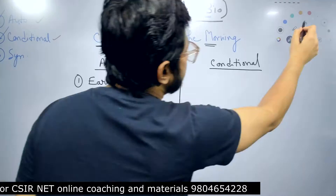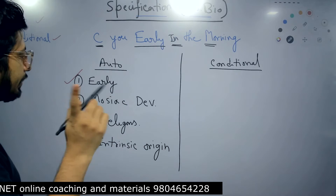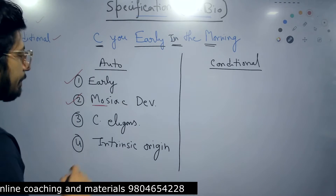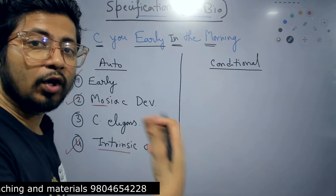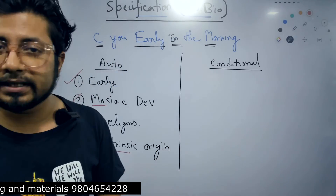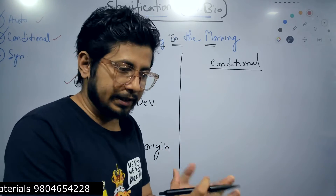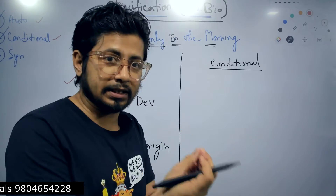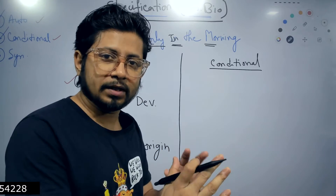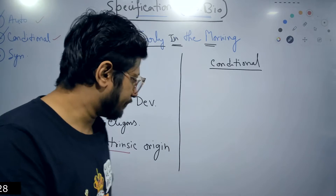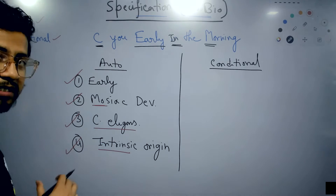So these are the four features we can easily draw from the sentence 'See you early in the morning': Early — it happens early during development; Morning — MO for mosaic development; In — for intrinsic, meaning intrinsic factors play a crucial role in autonomous specification. Intrinsic factor means anything related to genes, the mRNAs present even before fertilization — they play an important role. Right after fertilization the mRNA is translated into proteins, and the presence of those proteins results in the transformation of the embryo. The example is C. elegans development, which is an example of autonomous specification.